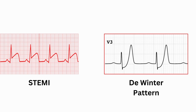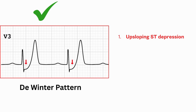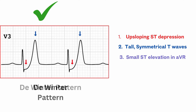Now comes the twist — in the De Winter pattern, the artery is still blocked, the patient is still in trouble, but the ECG tricks you because there is no classic ST elevation. Instead, you will notice three things: upsloping ST depression at the J point in the precordial leads, tall sharp symmetric T waves right after, and sometimes a small ST elevation in AVR, which is very rare.